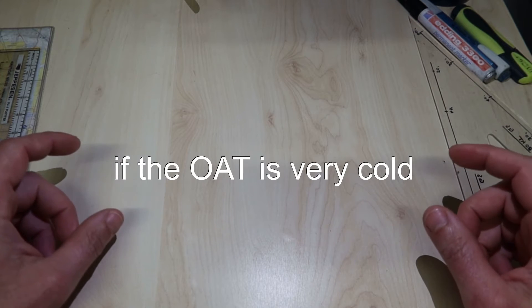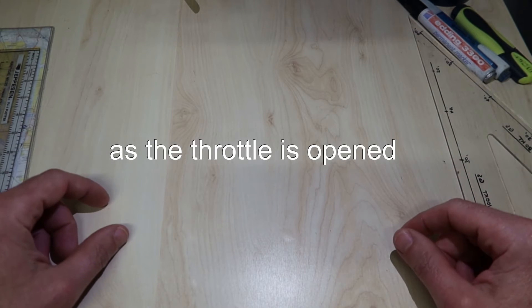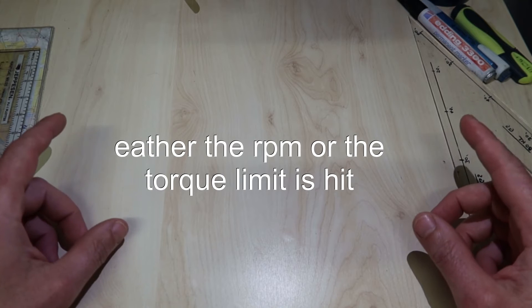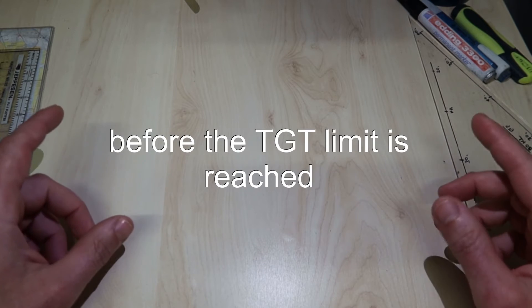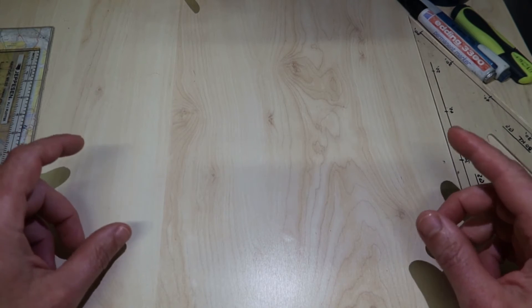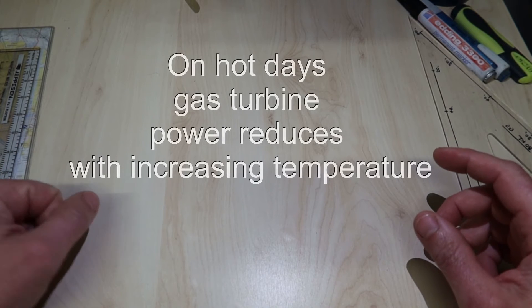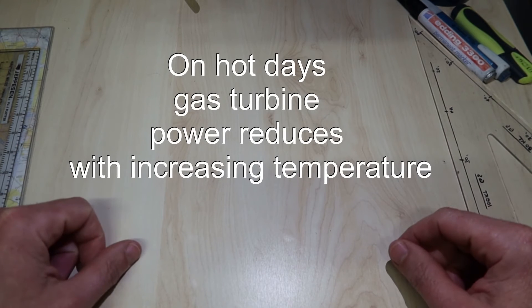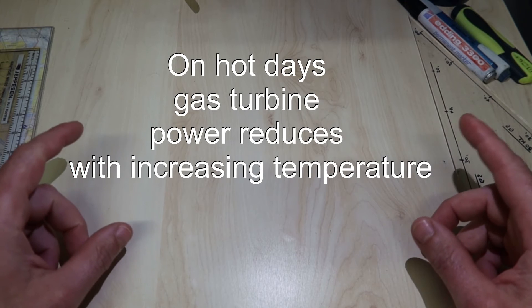If the outside air is very cold, as the throttle is opened, either the RPM or the torque limit is hit before the total gas temperature limit is reached. As long as the maximum power is regulated by the RPM or torque limit, it will be almost constant, independent of temperature.